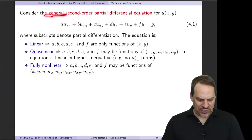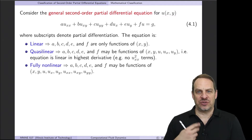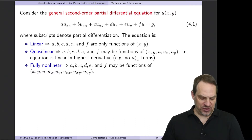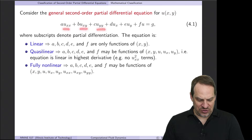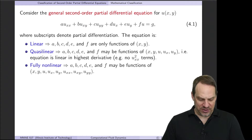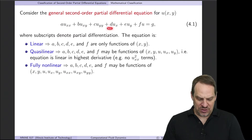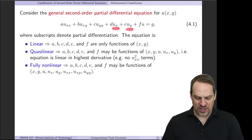So let's start with a general second-order partial differential equation for function u as a function of the independent variables x and y — a two-dimensional partial differential equation. The subscripts indicate partial differentiation, so uxx is ∂²u/∂x², uxy is ∂²u/∂x∂y, and so forth. The coefficients are a, b, c on the second derivative terms, and d, e on the first derivative terms in x and y.